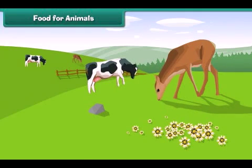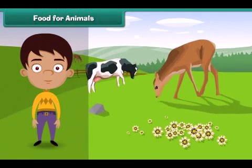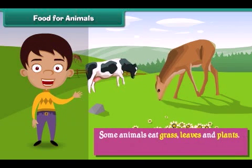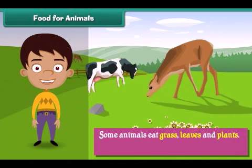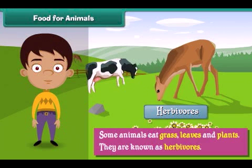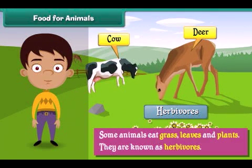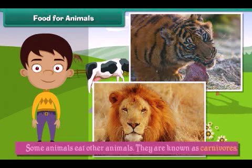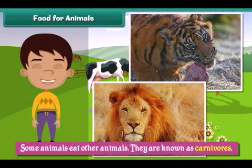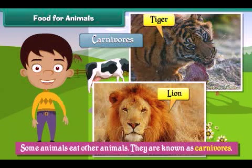Let us learn about what animals eat. Some animals eat grass, leaves, and plants — they are known as herbivores. Examples of herbivores are cows and deer. Some animals eat other animals — they are known as carnivores. Examples of carnivores are lions and tigers.